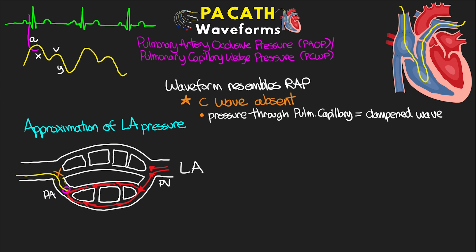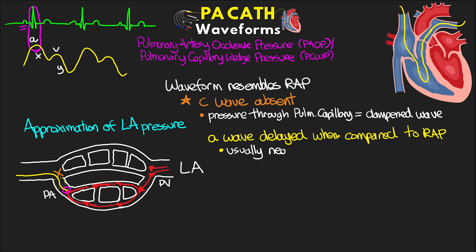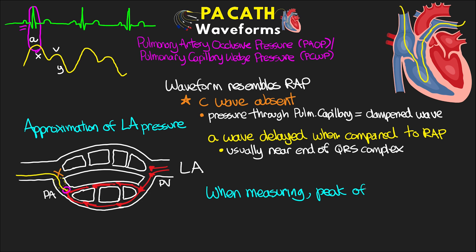So on the wedge waveform we just have an A wave, a V wave, an X descent, and a Y descent. The A wave on this waveform is actually delayed relative to the P wave on ECG compared to the right atrial pressure, because the pressure has to travel back through the pulmonary veins, the pulmonary capillary bed, and the long portion of the pulmonary artery catheter before we can read it. On the monitor it typically appears near the end of the QRS complex in a normal patient. When measuring, look for the A wave — the peak of the A wave corresponds to the left atrial pressure.